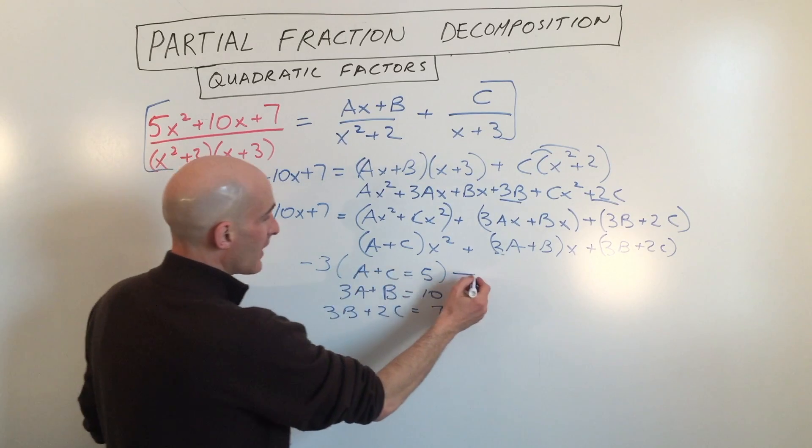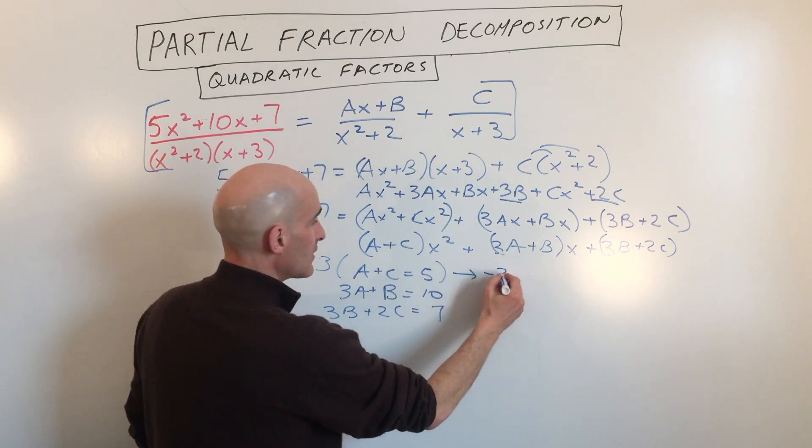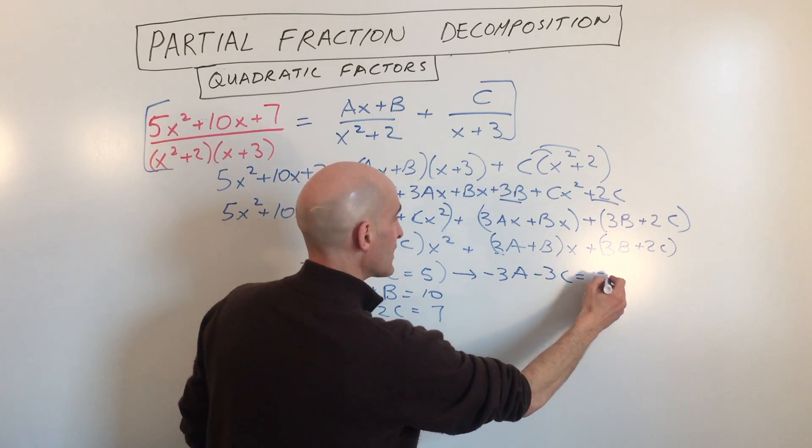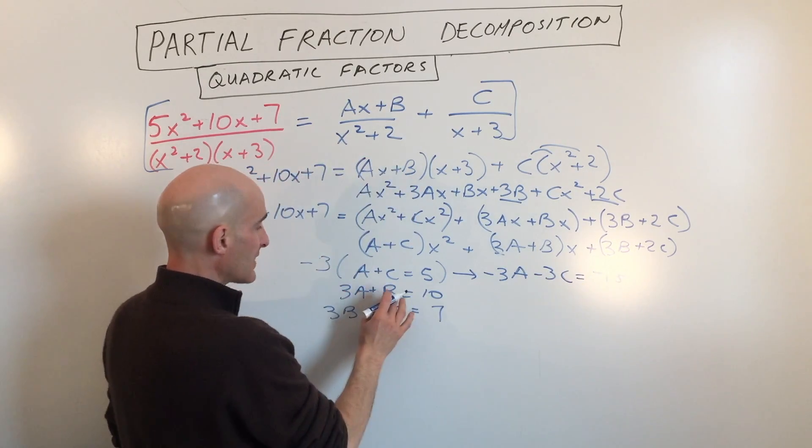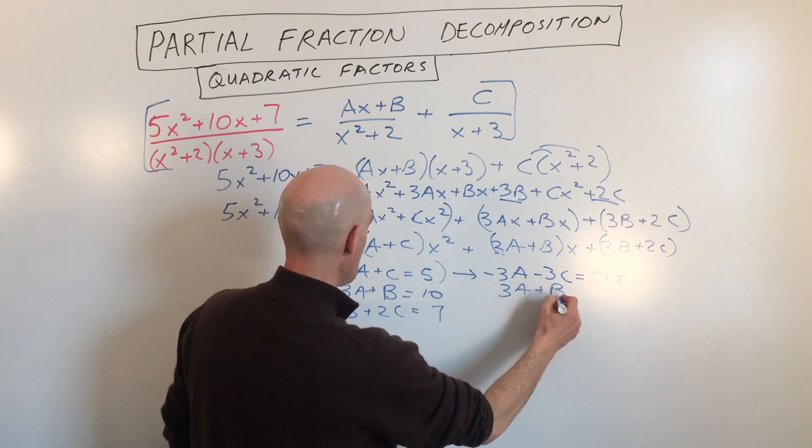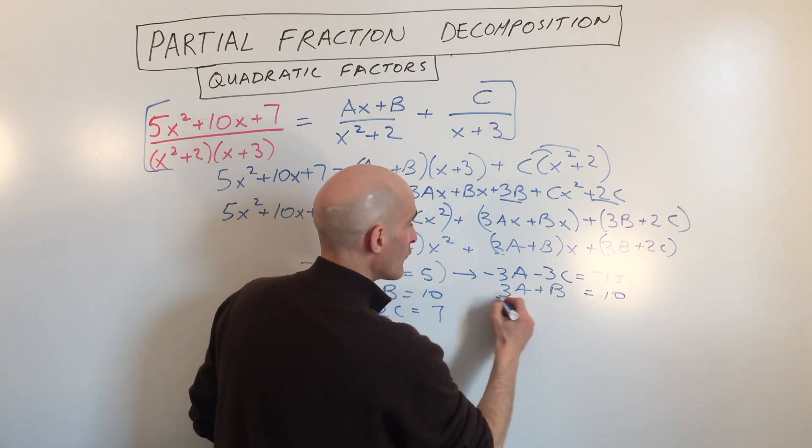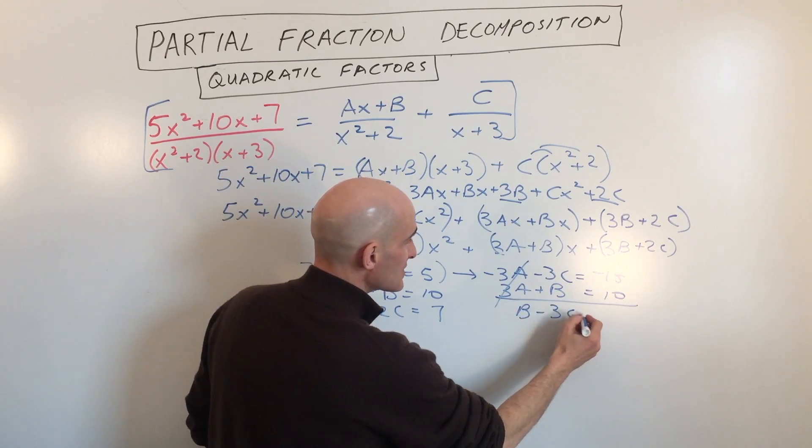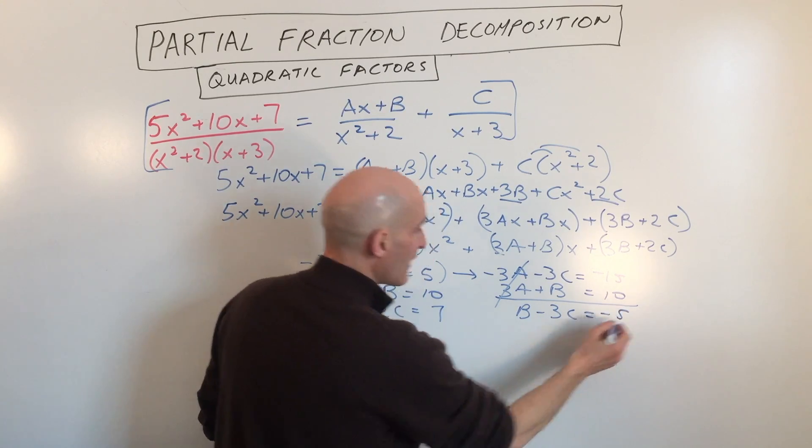So if we do that, we get negative 3a minus 3c equals negative 15. I'm going to add it to this equation here, 3a plus b equals 10. If we add those together, you can see the a's are going to cancel. And we get b minus 3c equals negative 5.